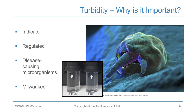That's why EPA released the Long-Term 2 Enhanced Surface Water Treatment Rule, providing additional logs of cryptosporidium credit for combined filter effluent performance less than 0.15 NTU and never greater than 0.3 NTU. Voluntary optimization programs such as the Partnership and the Area-Wide Optimization Program target less than 0.1 NTU.